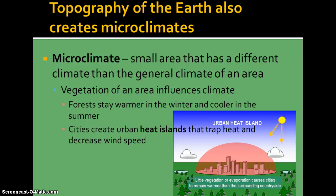Microclimates also exist depending on the topography of the Earth. Topography is the shape of the Earth's surface, and a microclimate is an area that has a different climate than the surrounding area. Usually it's affected by vegetation — forests are going to stay warmer in the winter and cooler in the summer. Cities have what is called an urban heat island because they trap heat: more traffic, more greenhouse gases, buildings that decrease wind speed, and very little evaporation or vegetation.